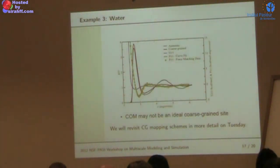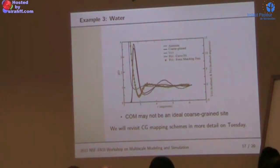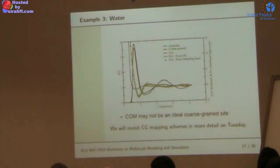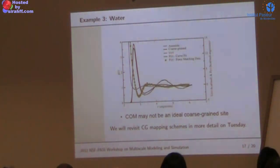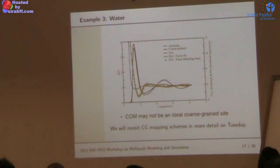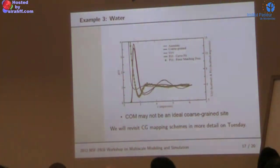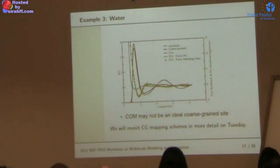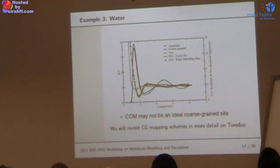The third example is water coarse-grained to the center of mass. We see some difficulty reproducing the second neighbor shell. It's not obvious that the center of mass is the best place to put the point for a single coarse-grained site of water. You could also place it at the geometric center — you don't have to use the center of mass — and we'll look at those coarse-grained mapping schemes as well.